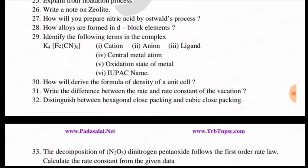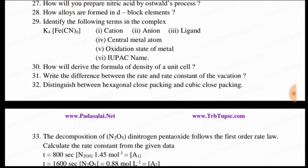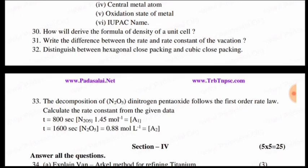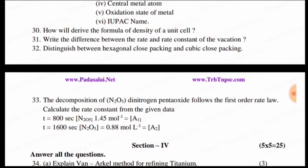Okay friends, let's go. This is the 30th one. The formula of density of unit cells is very important. The difference between rate and rate constant of the reactions is very important. The 30th one is very important. The hexagonal close packing and cubic close packing. This is very important.